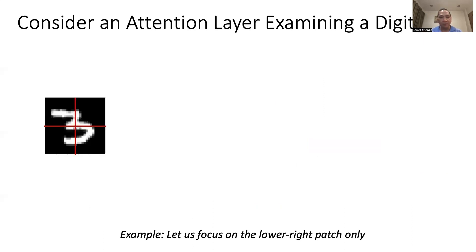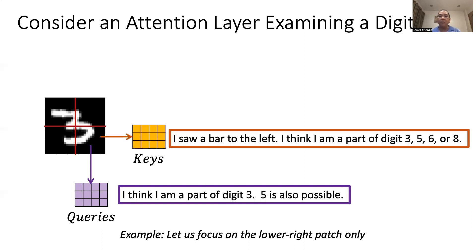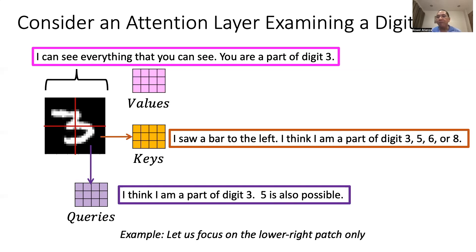When applied to image classification, attention can be roughly described as follows. Assume that we divide the image into four patches and focus on the lower right patch. The query thinks it is a feature of digit 3 or maybe digit 5. Meanwhile, the key thinks it is a feature of digit 3, 5, 6, or maybe 8. The dot product of Q and K enables a value to see the overall picture to make a better decision. In this case, with all things considered, the patch is from digit 3.